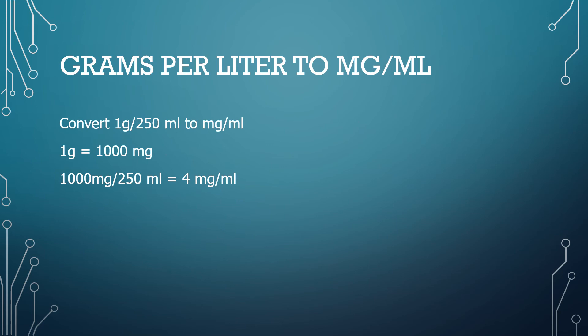Lastly, let's look at how to convert grams per liter to milligram per milliliter. Let's look at this example: convert one gram per 250 mL to milligram per mL. The bottom number is already in mL. We need to convert the top number, which is in grams, to milligrams. One gram equals one thousand milligrams. Now we have one thousand milligrams over 250 mL, and when you divide them your final answer will be four milligrams per mL.